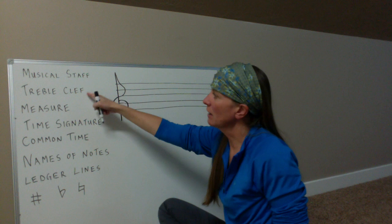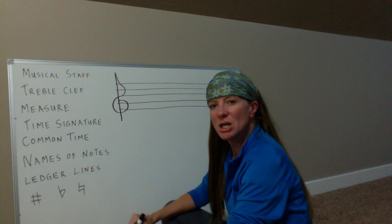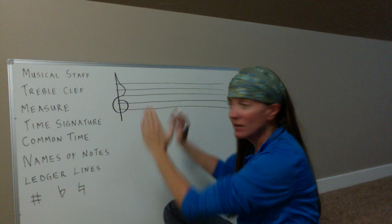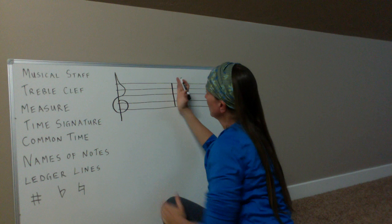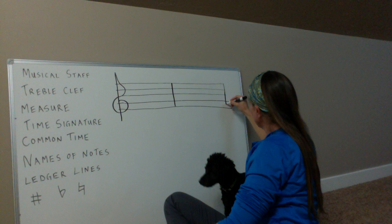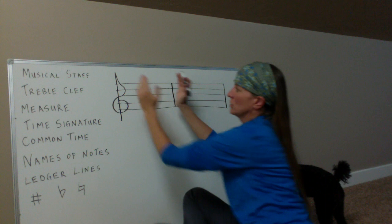Next is the measure. A measure is a certain amount of space on the musical staff that is divided by lines. Here is a measure line, or a bar line. So from here to here is one measure, then if I draw another measure line, that is the second measure. So here's measure one, and here's measure two.